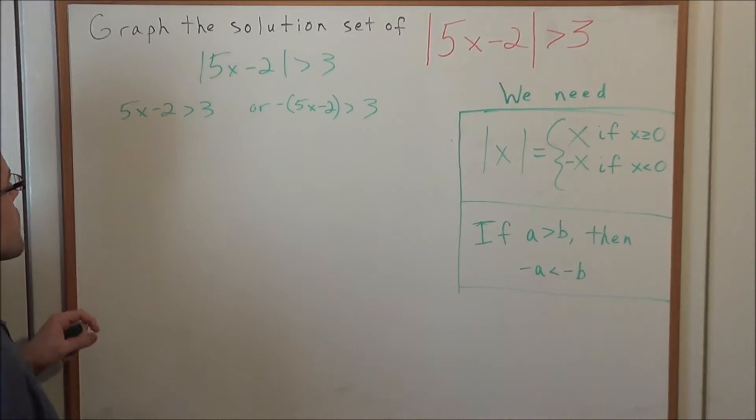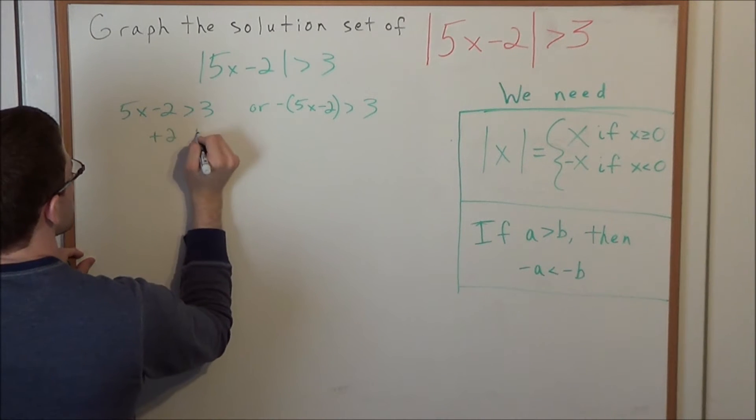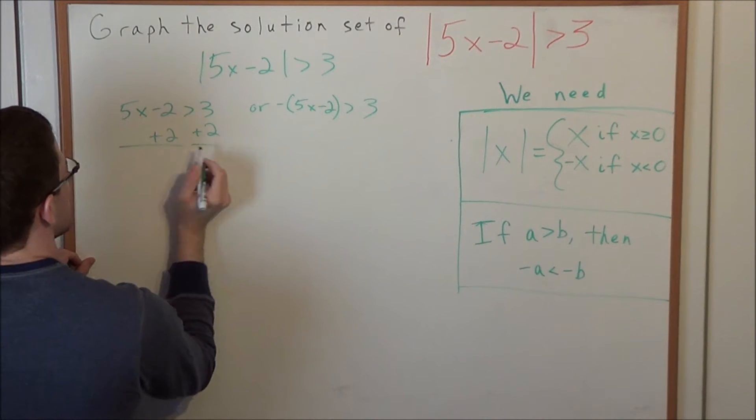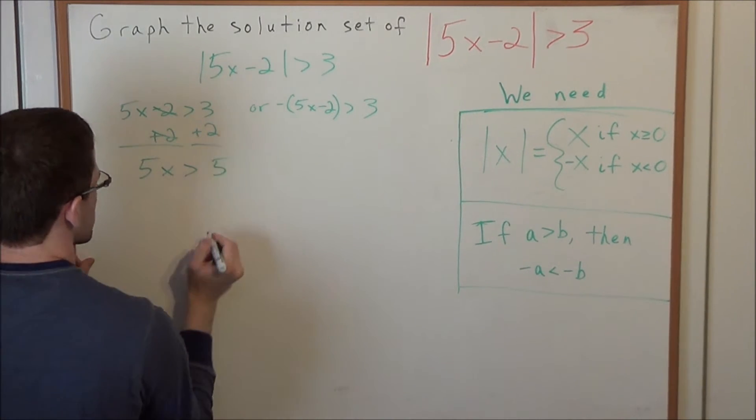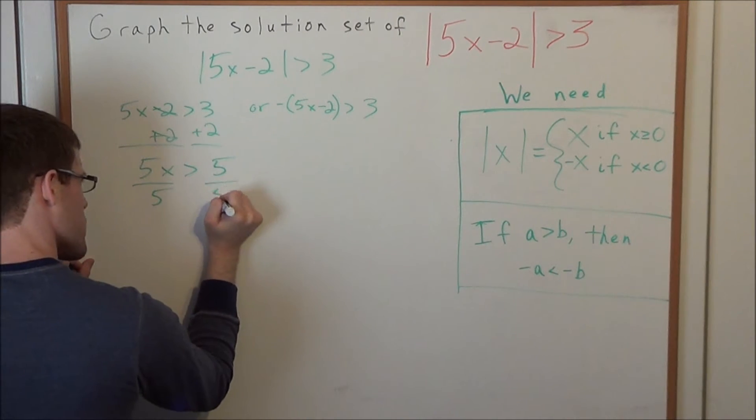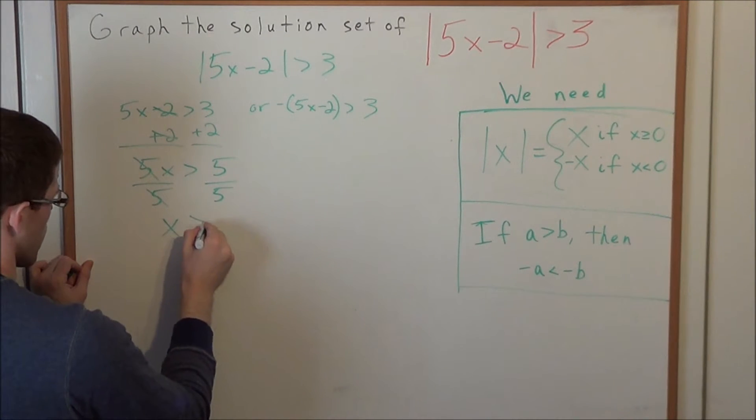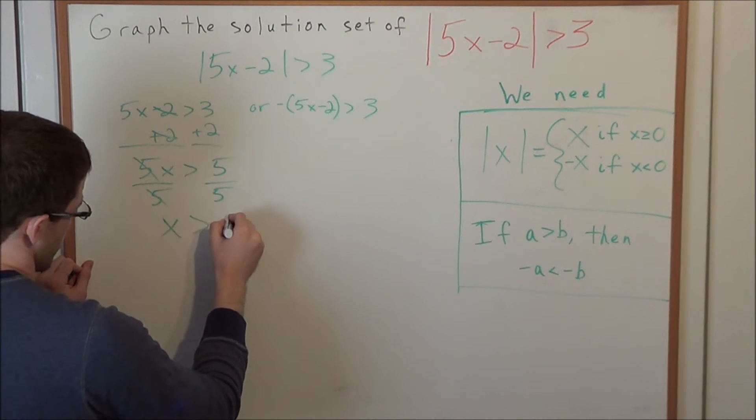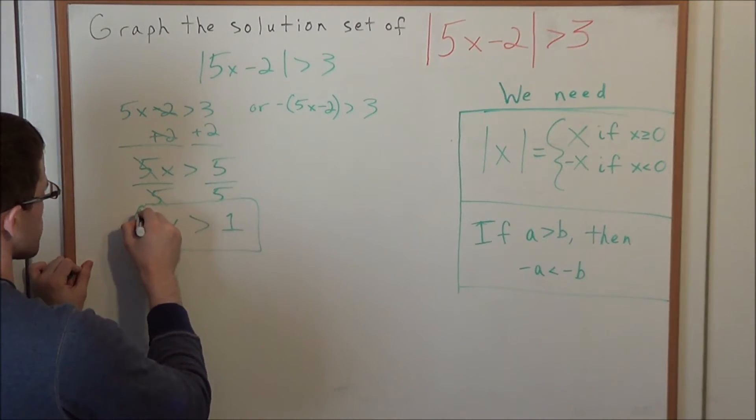So now let's go ahead and solve this inequality first. We're going to add 2 to both sides, and now we have that 5x is greater than 3 plus 2. So we have 5x is greater than 5. Now let's solve for x. We go ahead and we divide by 5. These 5s cancel, and we have that x is greater than 5 divided by 5, or x is greater than 1. This is going to tell us one piece of our solution.